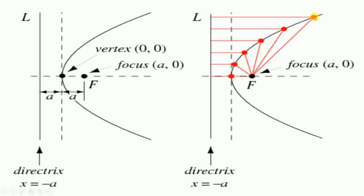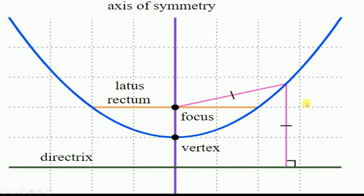For any point on the parabola, if you measure its distance to the focus and its distance to the directrix, these are equal — they maintain a constant ratio called eccentricity. This illustrates why the conic section is always symmetrical about the principal axis.